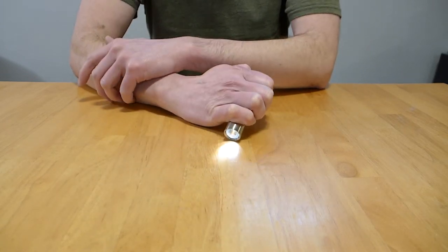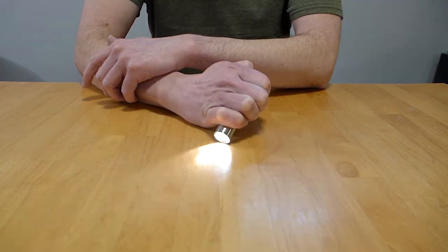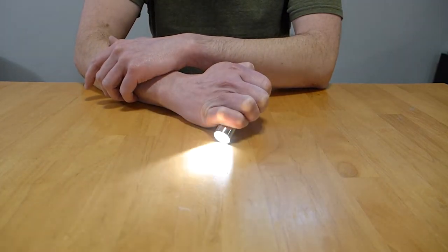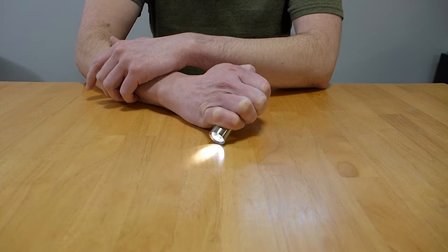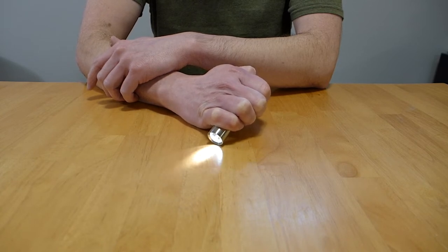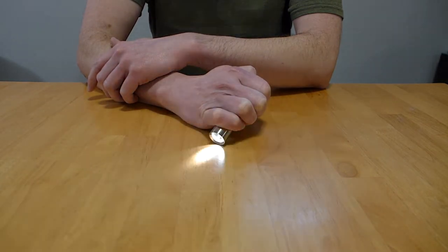So let's get started. To get into the programming menu, you tap the tail switch 50 times or more. You don't need to count, there's a little light show that plays, so you just basically keep tapping until you see it. There we go, looks like this.